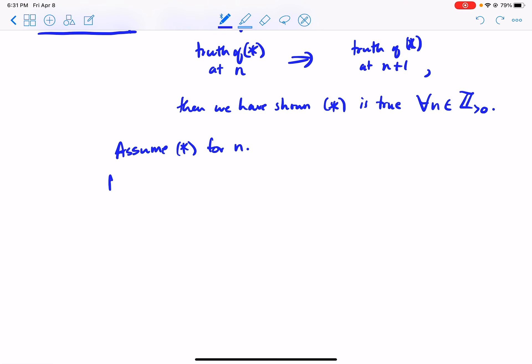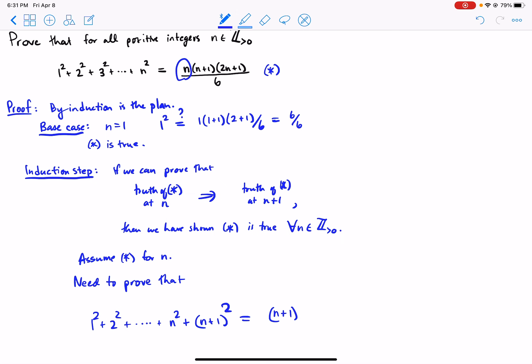Okay, so then need to prove that 1 squared plus 2 squared plus all the way up to n plus 1 squared is equal to, n plus 1, now n plus 2. And then here is 2 times, and I have to be careful, 2n plus 1 becomes 2 times n plus 1 plus 1 when I replace n by n plus 1. This is confusing, but you'll get it. It's 2n plus 2 plus 1, which is 2n plus 3.